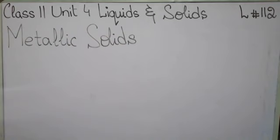Nowadays we are discussing about solids. In my previous lecture, I covered different categories of crystalline solids — we studied ionic solids, covalent solids, and molecular solids. Today we are going to discuss the fourth category of solids: metallic solids.